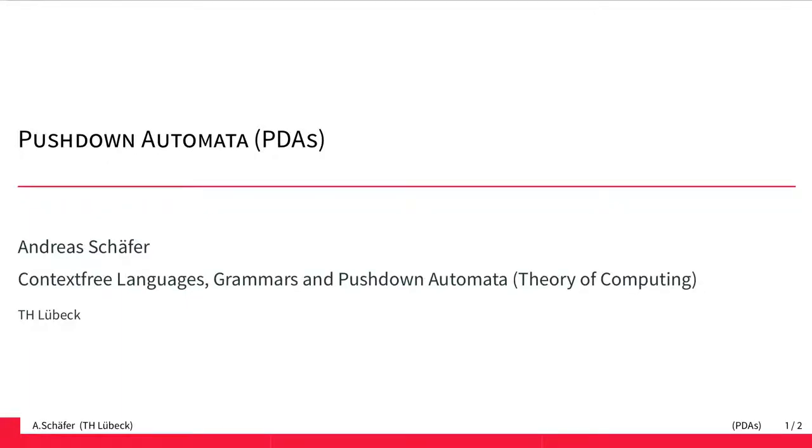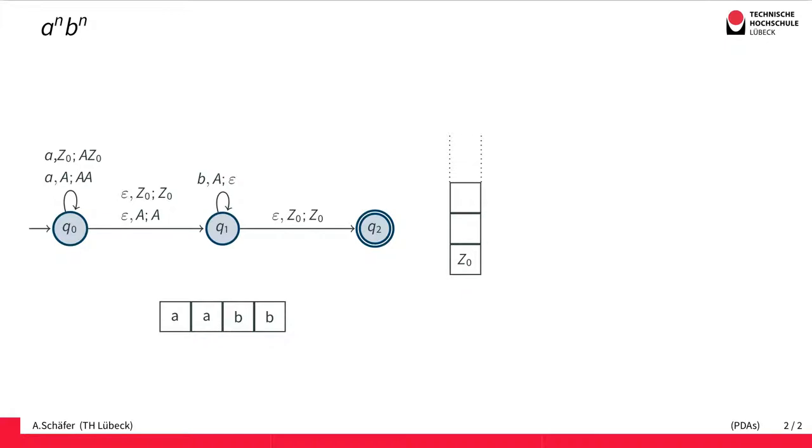This video is about pushdown automata, or PDAs, which are the automaton model for context-free languages. Intuitively, finite automata cannot accept a language like this one, in which you have N A's followed by N B's, because they don't have any external memory.